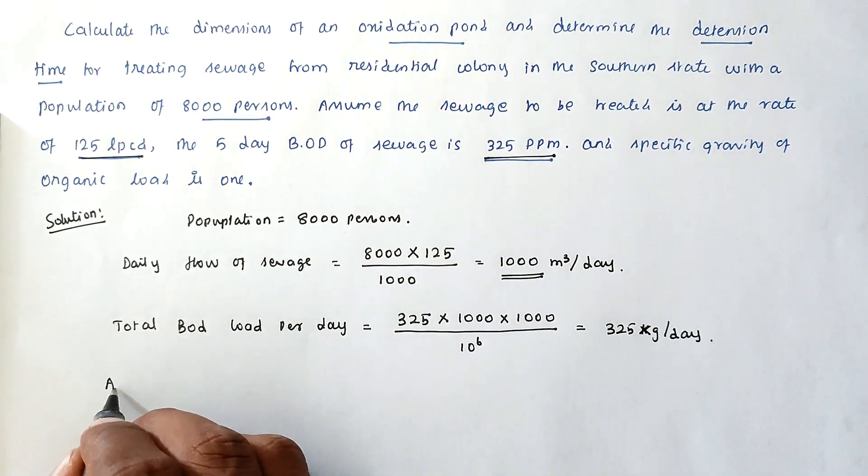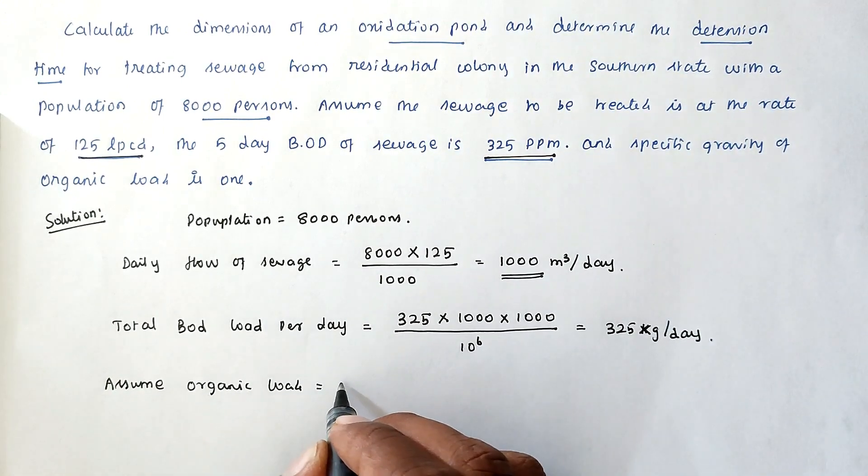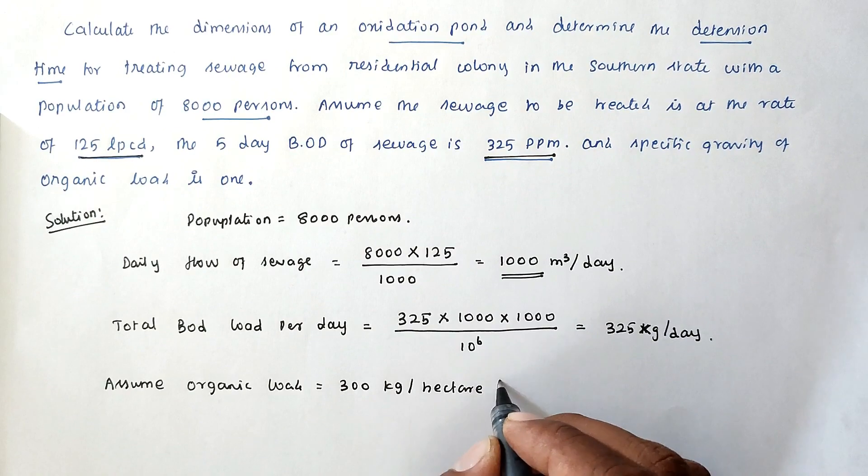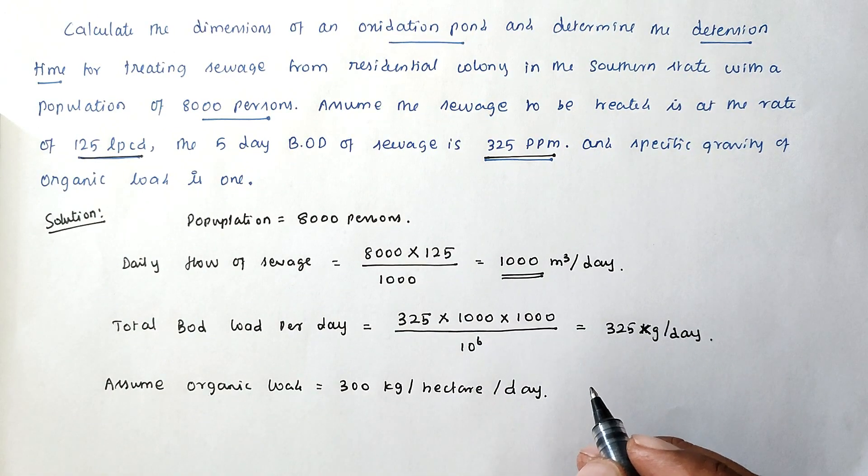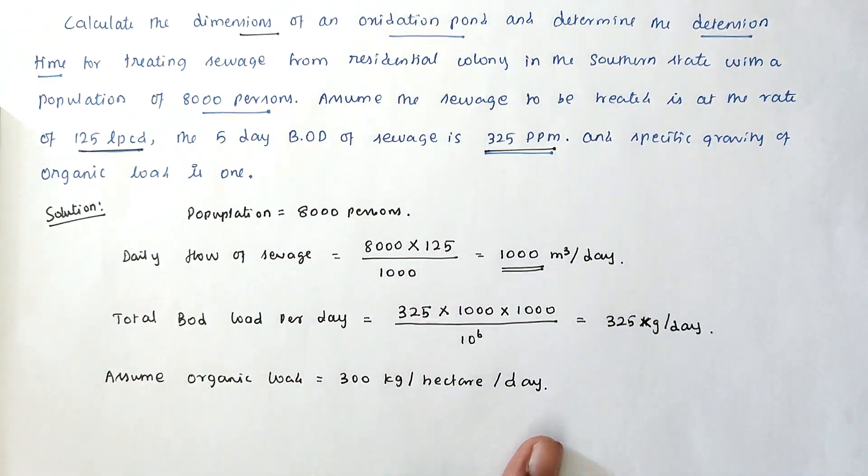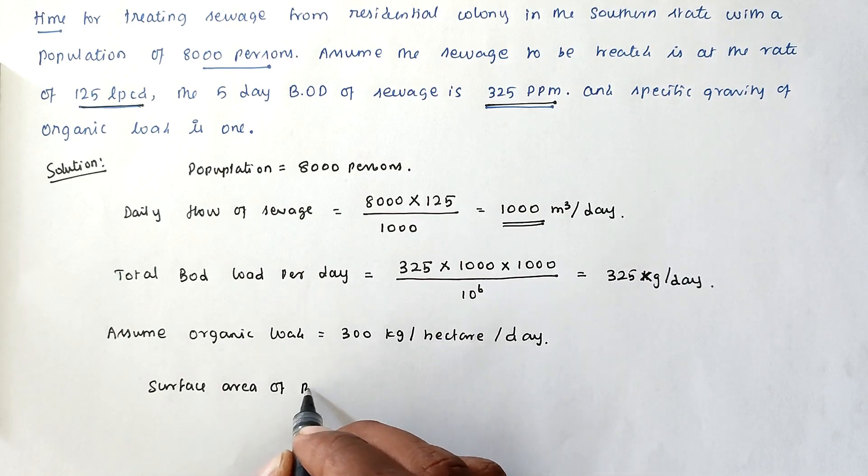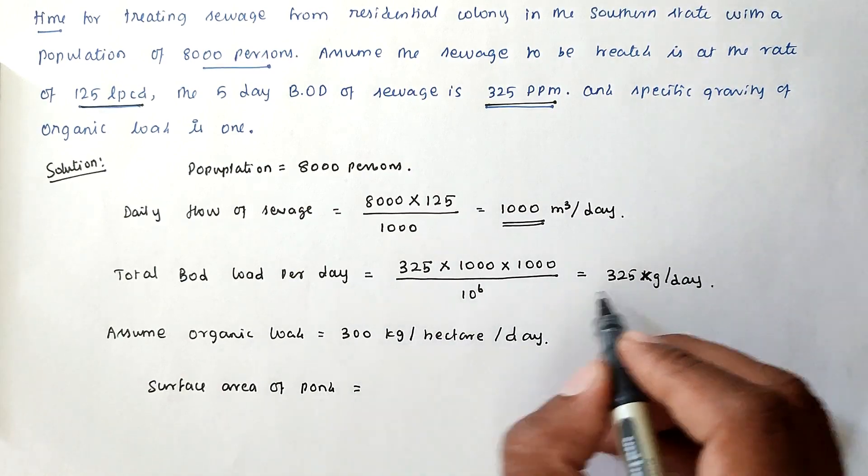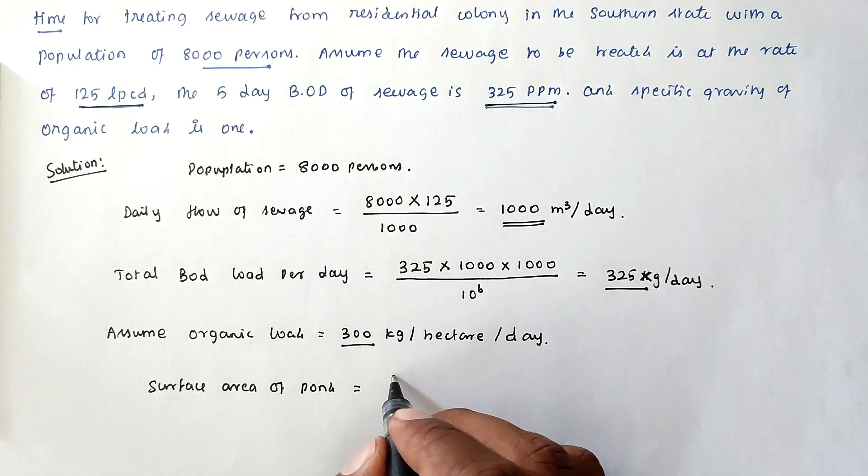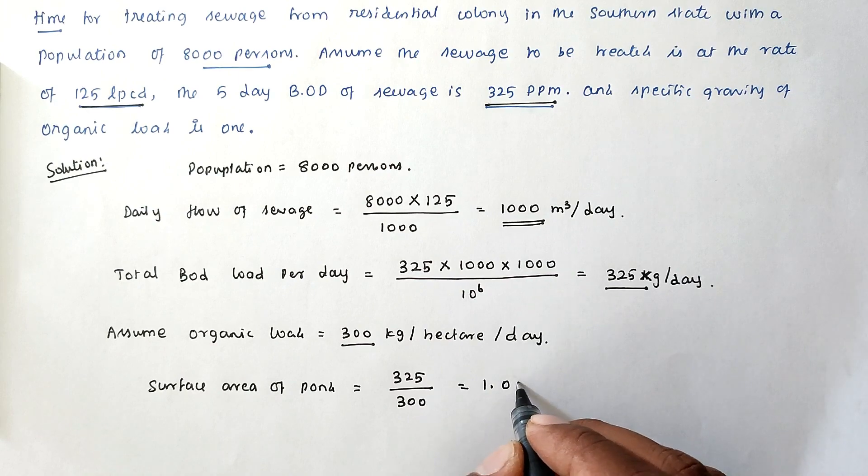Now we assume organic loading approximately 300 kg per hectare per day. Now we have to find out the surface area of the pond. Surface area of the pond equals total BOD required and organic loading is 300, so 325 divided by 300. We got the value of 1.083 hectares.